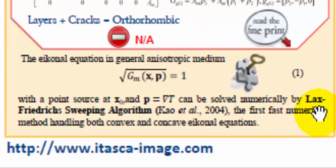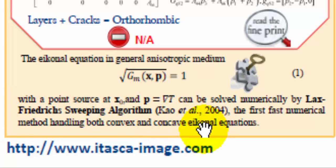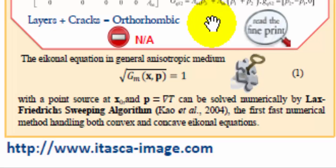We found this Lax-Friedrichs sweeping algorithm. According to the author, this is the first and fast numerical implementation to solve the Eikonal equation in general anisotropic media for both P and S, without assuming convexity, so it can be applied to both P and S waves. It doesn't need the analytical expression for the Eikonal equation — all it needs is the eigenvalue, which can be solved numerically.